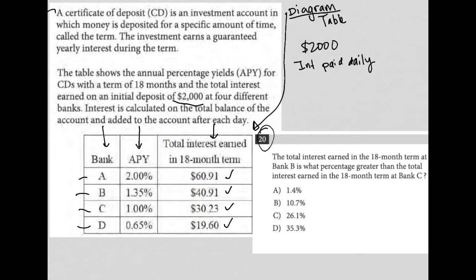Question 20 says the total interest earned in the 18-month term at Bank B is what percentage greater than the total interest earned in the 18-month term at Bank C? So the total interest earned at Bank B is $40.91, and the total interest earned at Bank C is $30.23.